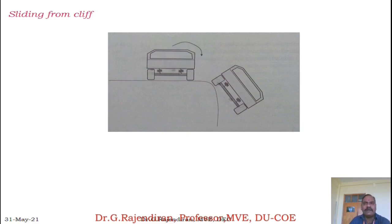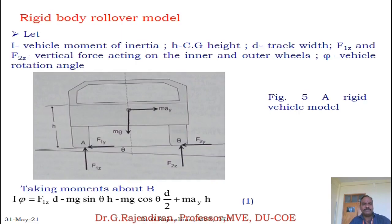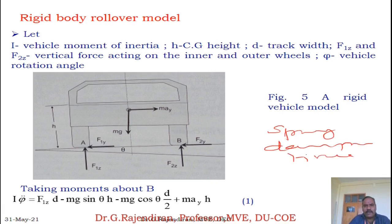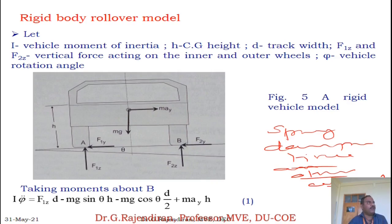Now we will go for the rigid body rollover model. The vehicle consists of many rigid bodies — for example, spring, damping, tyre, and other components — which are termed together as one mass or one unit. That is called a rigid body. Assume a rigid body vehicle where the road is either flat or making an angle theta with the horizontal. I is the vehicle moment of inertia, H is the height of centre of gravity from the ground, and D is the track width.